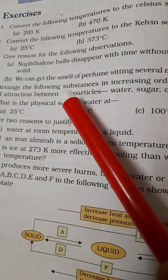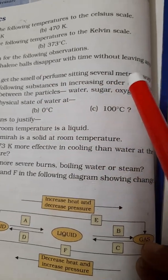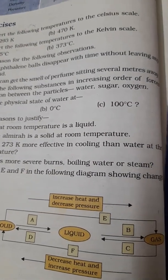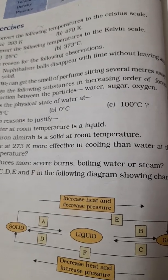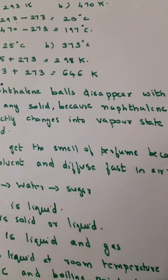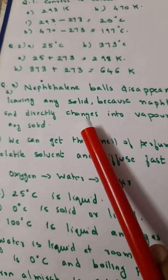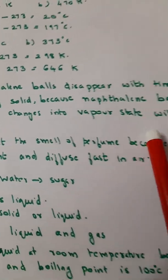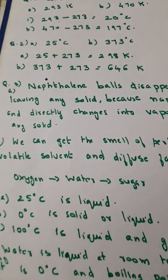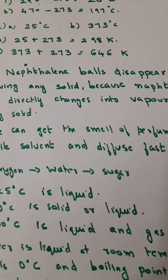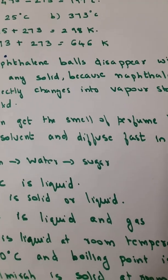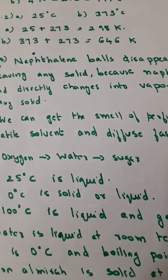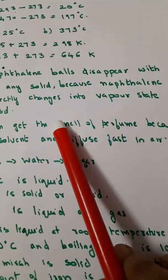Now next you are asked to give reason for the following: naphthalene balls disappear with time without leaving any solid. Why do they disappear? You know if you keep it outside for some time it keeps disappearing. Why is it like that? See, naphthalene balls disappear with time without leaving any solid because naphthalene balls sublime and directly change into vapor state without leaving any solid. What is sublimation? It is a process by which a solid particle changes into vapor without coming into the intermediate state, without leaving any residue or solid.